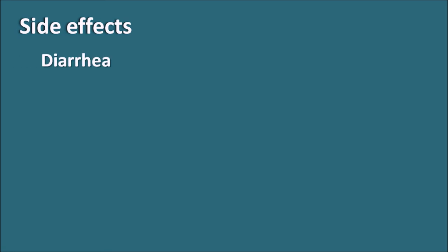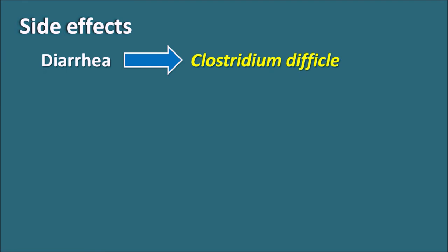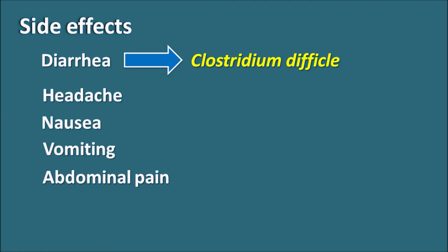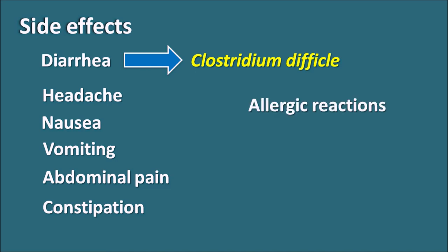The important side effects of Lansoprazole include diarrhea, which is mainly produced by Clostridium difficile infection, and headache, which is commonly observed in most patients. Other side effects include nausea, vomiting, and abdominal pain. Constipation can also occur — not related to C. difficile infection but due to inhibition of gastric acid secretion. Allergic reactions and bone fractures can also be observed with Lansoprazole.